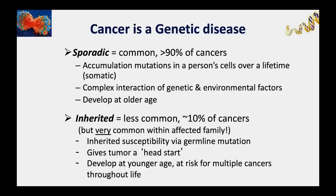Inherited cancers are less common overall, accounting for only about 10% of all cancers. However, in families with an inherited cancer syndrome, cancers are very common. These are due to an inherited susceptibility—a particular germline mutation in a gene—that gives the tumor a headstart. Individuals with this cancer predisposition tend to develop cancers at a younger age and are at risk for multiple cancers throughout their life.